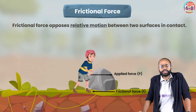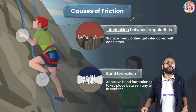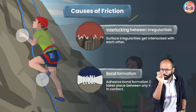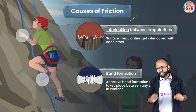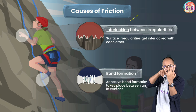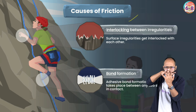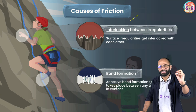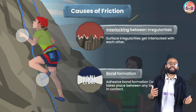What are the causes of friction? The first cause is interlocking between irregularities. When we have two surfaces which look smooth, they are actually not smooth at the microscopic level. If you look very closely through a microscope, you realize surfaces have irregularities — you can say hills and valleys. When two surfaces come close to each other, these hills and valleys interlock among each other. So interlocking of irregularities is one reason for friction.